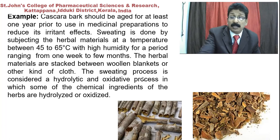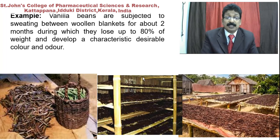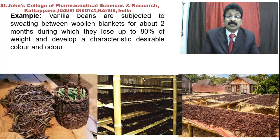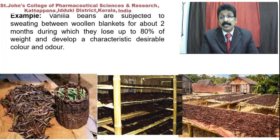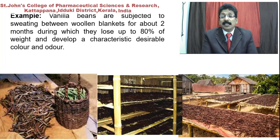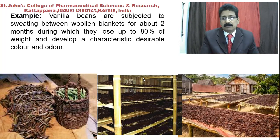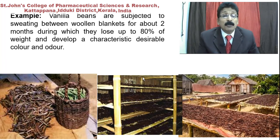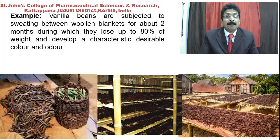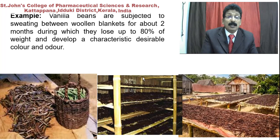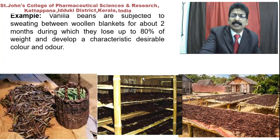Another example is vanilla beans, which are subjected to sweating — kept between woolen blankets for about two months, during which they lose up to 80% of their weight and develop a characteristic desirable color and odor.